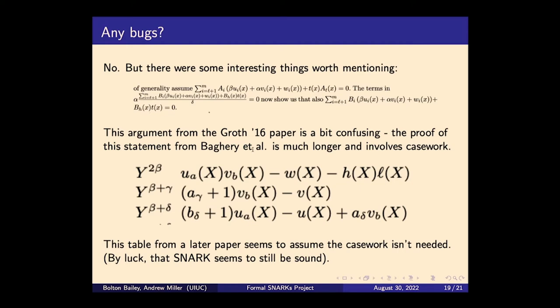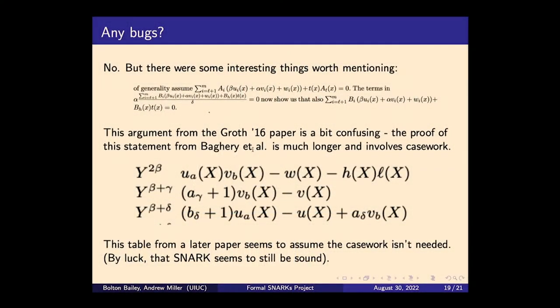That led to a moment of panic for me — I called up Andrew and said 'Groth16 is broken!' But ultimately there was no problem and the SNARK worked fine. However, I do worry about how this could be misinterpreted in later papers. For example, there's a table in a later paper that assumes this statement about all coefficients being equal to zero is true, and that other SNARK — based on Groth16 — still seems to be sound due to a coincidence in how the toxic waste elements were chosen. But that could easily have not been the case.